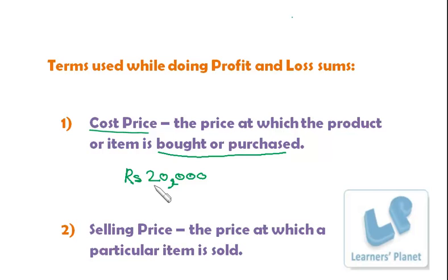So, what will be this? This amount is known as the Cost Price because Raj bought the camera which was being sold by the seller for Rs. 20,000. The price at which the camera was bought by Raj is the Cost Price.